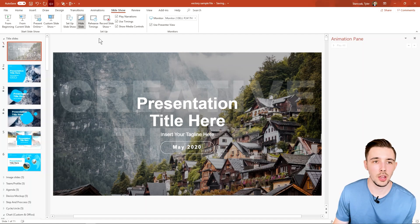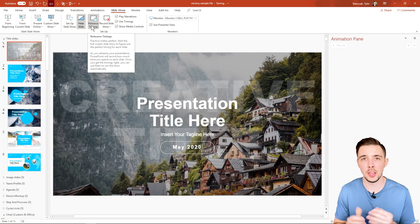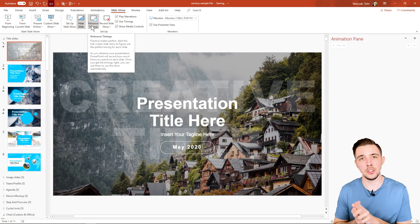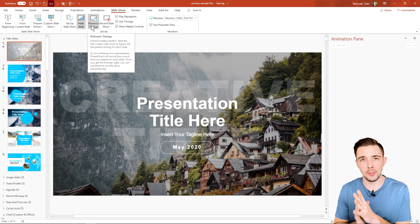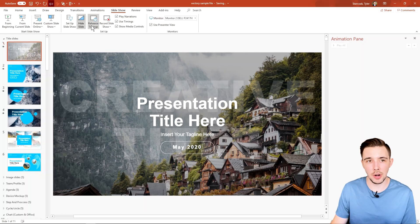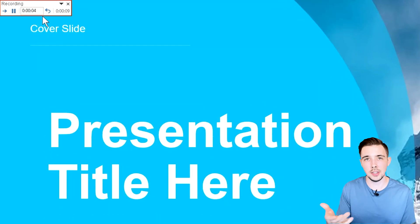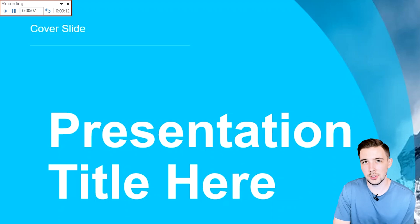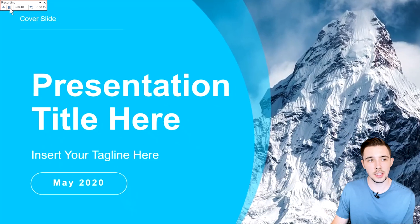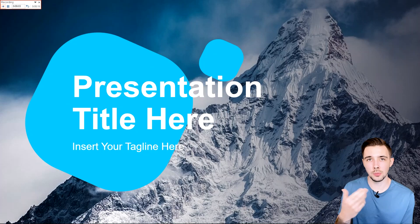Next is 'Rehearse Timings.' Let's say you have a speech for your PowerPoint presentation and you don't have a clicker or mouse — you just want to time out your entire presentation so each slide advances automatically. Rehearse Timings solves that. When you click it, a timer appears and starts counting how long you spend on each slide. When you're ready to move on, hit the right arrow and it keeps counting for the next slide.